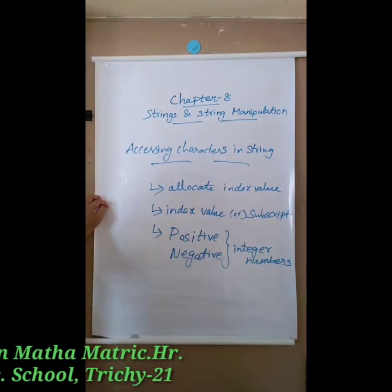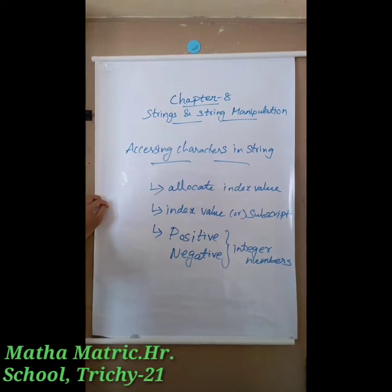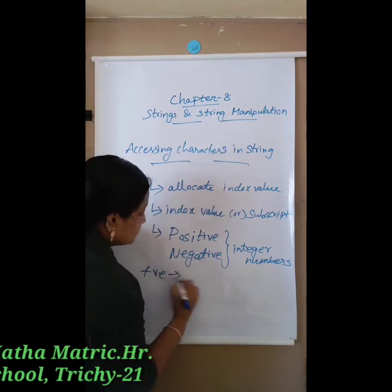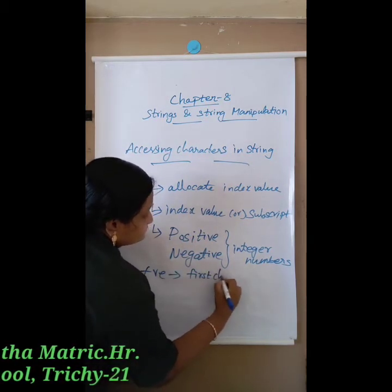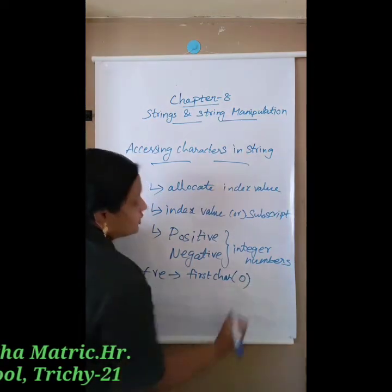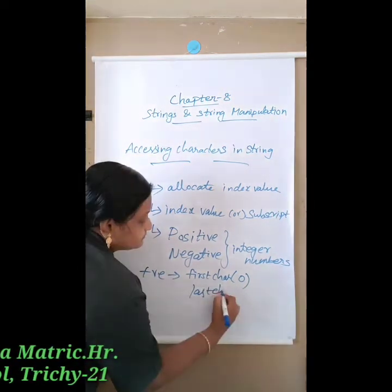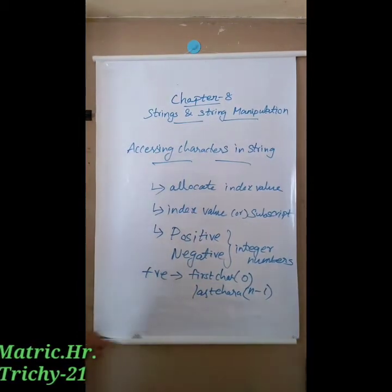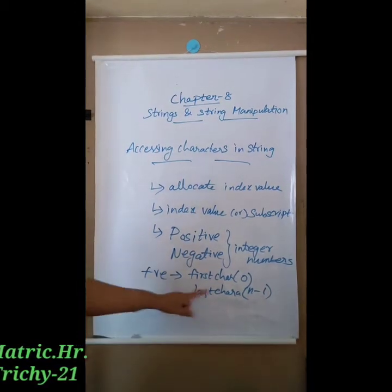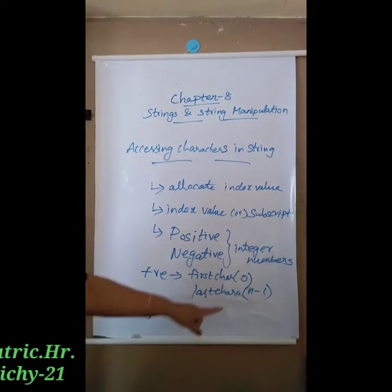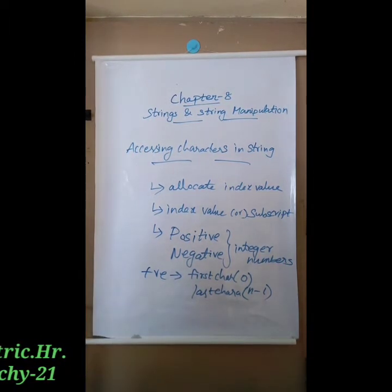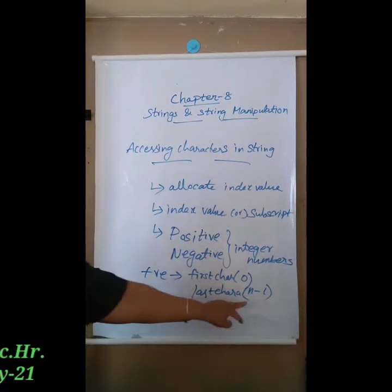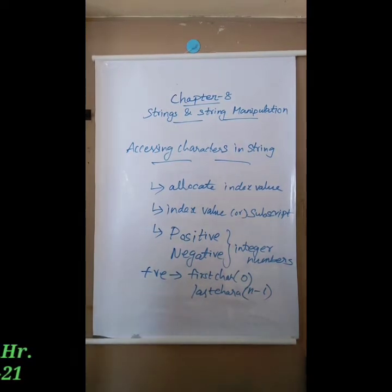For positive subscripts, the first character is assigned index 0, and the last character is assigned index n minus 1, where n is the number of characters in the string.